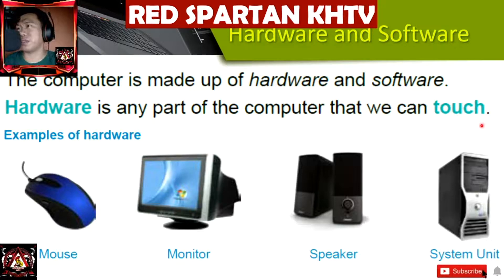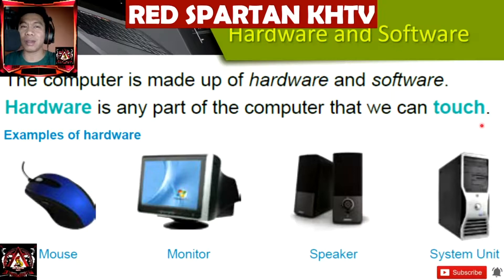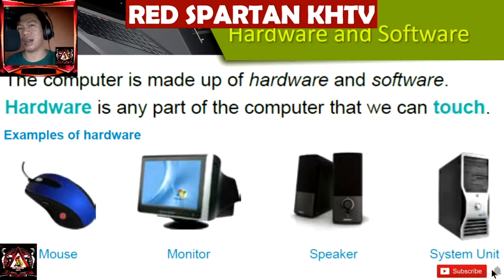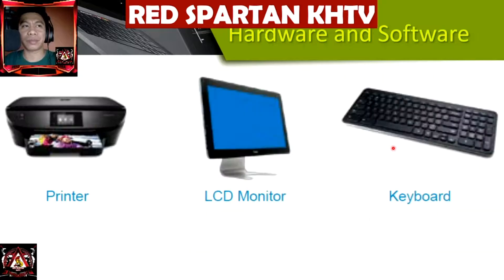So what's the difference between hardware and software? The computer is made up of hardware and software. Hardware is any part of the computer that we can touch. For example, if you can touch a mouse, that's hardware. Monitor, speaker, and system unit are also hardware. We also have printer, LCD monitor, and keyboard as hardware parts of the computer.